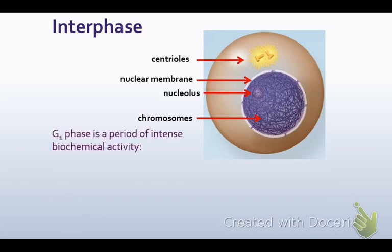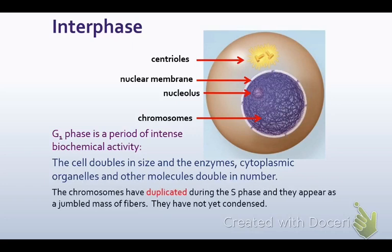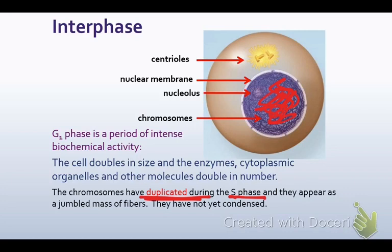In G1 phase of interphase, there's a period of intense biochemical activity. As stated in the last lecture, the cell doubles in size, and the enzymes, cytoplasmic organelles, and other molecules double in number — it just starts making more and more cell machinery. The chromosomes have then duplicated during the S phase, and they appear as a jumbled mass of fibers — like a hot spaghetti mess. They have not yet condensed into individual chromosomes; during the S phase, they are duplicated but not condensed.